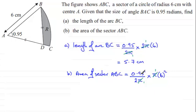But you can only use this formula when you're working in radians. If it was an angle again in degrees, it would be the angle over 360 degrees times πr².